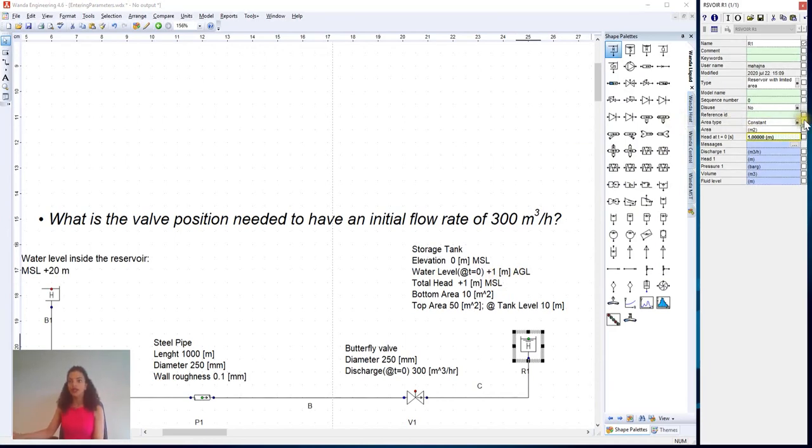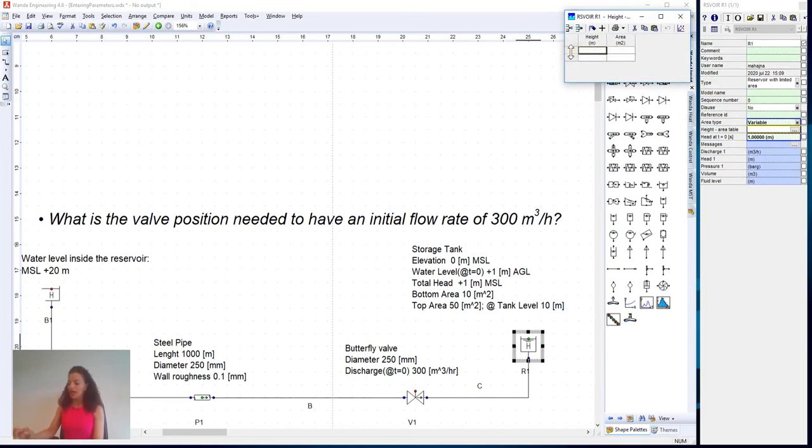So we choose an area type variable instead of constant, and we fill in the table that the area at height 0 equals 10, and at height 10 it equals 50 square meters.